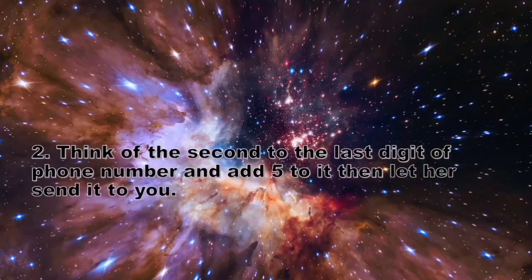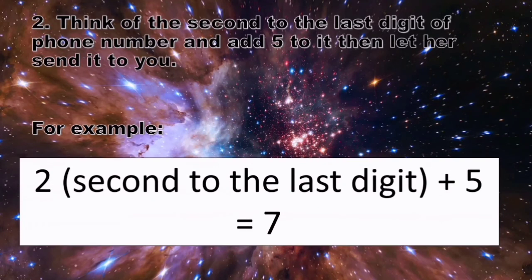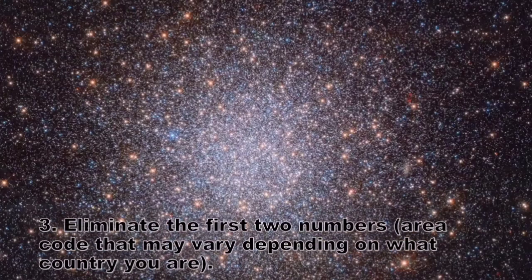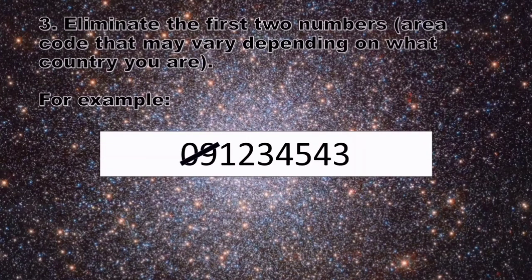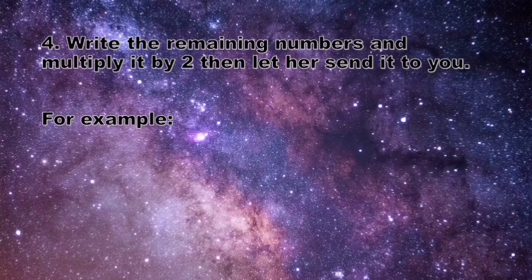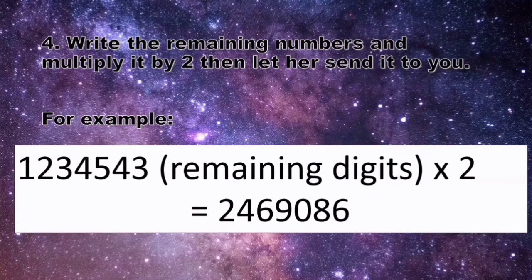The second step is the same as step 1, think of the second to the last digit of phone number and add 5, then let her send it to you. For example, 2 is the second to the last digit, you will add 5 and the sum is 7. 3. Eliminate the 2 numbers or the area code that may vary depending on what country you are. For example, 0 9 is the area code in the Philippines. 4. Write the remaining numbers and multiply it by 2, then let her send it to you. Wow, that's a rhyme. For example, 1 2 3 4 5 multiply by 2, you will get 2 4 6 9 0 8 6 for the remaining digit.